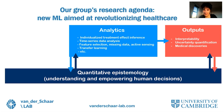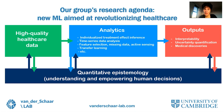At NeurIPS 2021, you can see our work on developing analytics for healthcare, ranging from new methods for individualized treatment effect estimation to missing data. The outputs of such analytics need to be interpretable and trustworthy, so you see work from our lab also in this area. We have even created a new branch of machine learning dedicated to understanding and empowering human decisions with a focus on healthcare, and we call this new field quantitative epistemology.